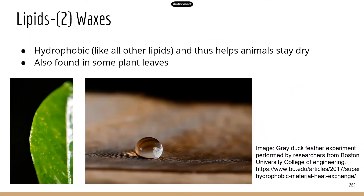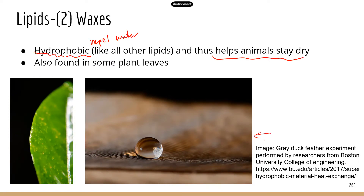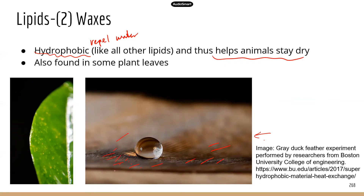The second type of lipid is waxes. Waxes, just like other lipids, are hydrophobic and not water-soluble because they repel water. These wax molecules will repel water. Because of that, waxes are used by animals to stay dry. A feather covered with hydrophobic wax shows a water drop that does not wet the feather — instead it stays on the surface because the wax layer repels the water. Water can't penetrate, so the feather stays dry, and when the animal shakes, the water just comes off.